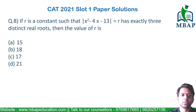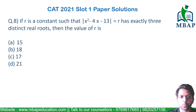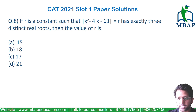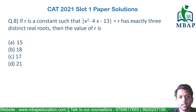Have a look at the next question. The question says: if r is a constant such that |x² - 4x - 13| = r has exactly three distinct real roots, find the value of r. Certainly, if you open the mod, on one side x² - 4x - 13 should be equal to +r, and on the other side x² - 4x - 13 should be equal to -r.